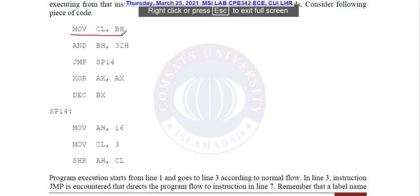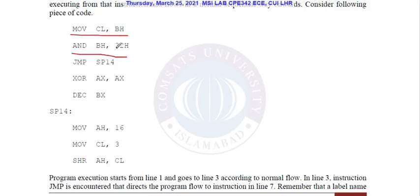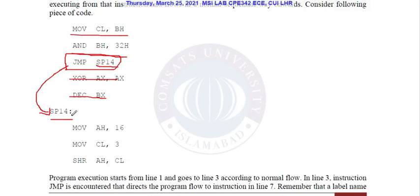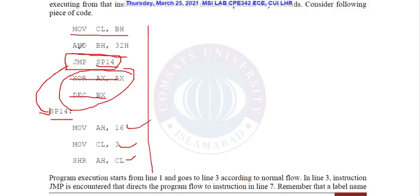To clarify the concept, there is an example: there is an instruction MOV CL, BH, then AND BH, 32. After this there is an unconditional jump which will move to the label SP14. So those two statements after the jump will not be executed and the flow will jump to label SP14. Then MOV AH, 16, then MOV CL, 3, and finally SHR AH, CL will be executed. Those two skipped statements will never be executed. The jump statement is similar to the goto statement — it changes the flow to that label without checking any condition.